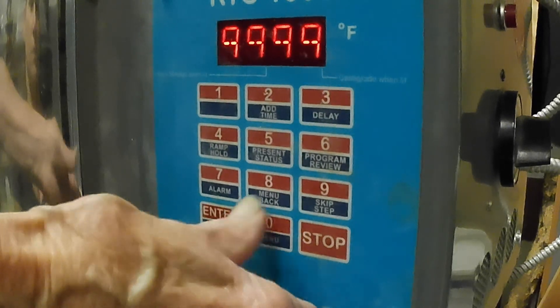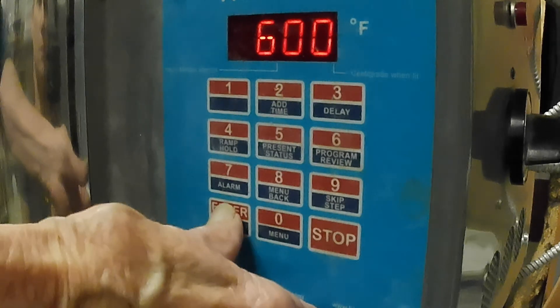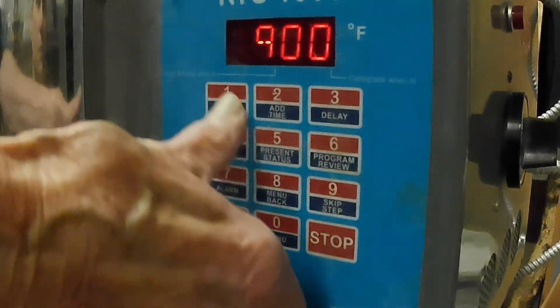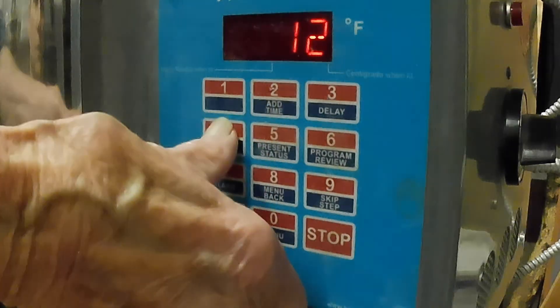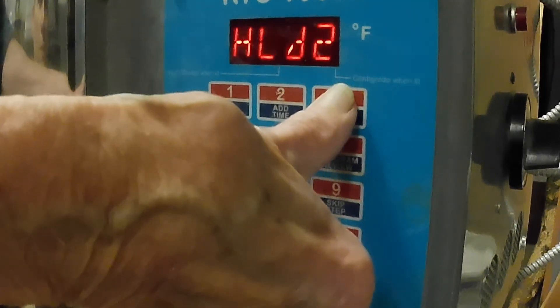Ramp 2 is going to be 600 degrees per hour and I'm going to take it to 1240 and hold it for 30 minutes.